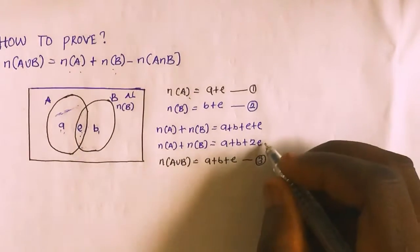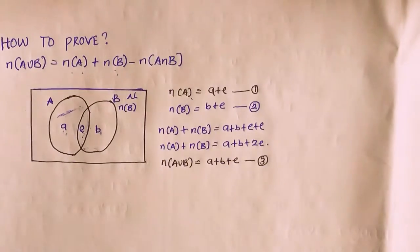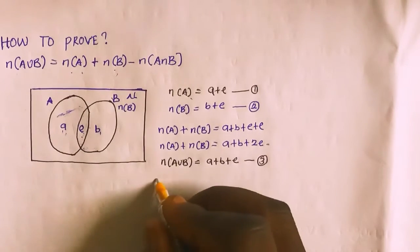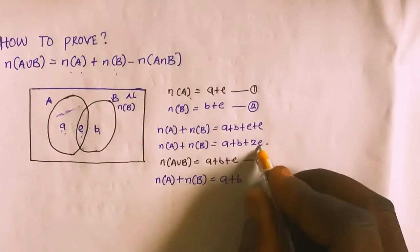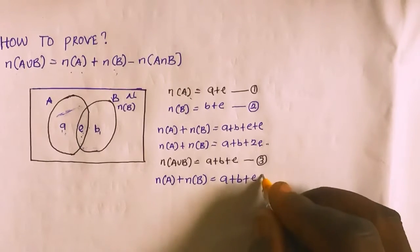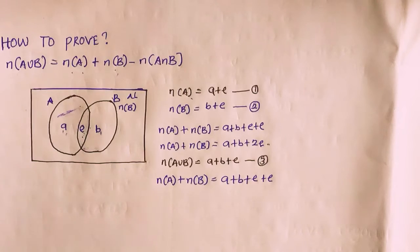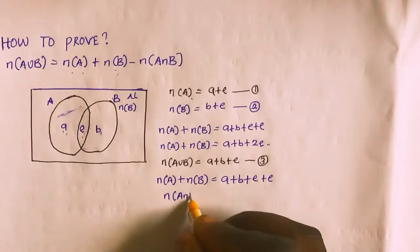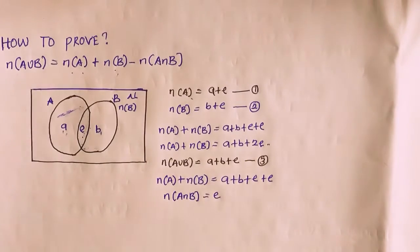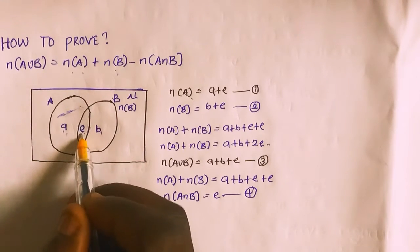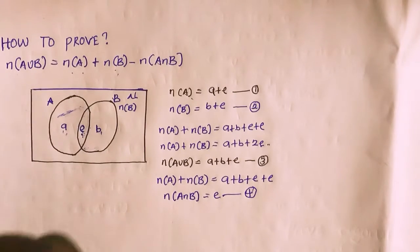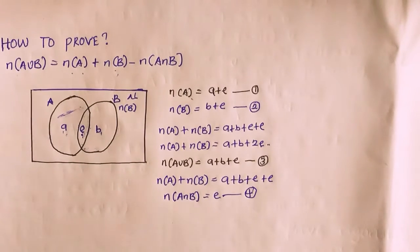Going back to the solution, cardinality of A intersection B is simply E. I'll call this equation 4. Because if you look at this set, the intersection of the two circles contains the element E. That is why E is the intersection of set A and set B, known as cardinality of A intersection B.